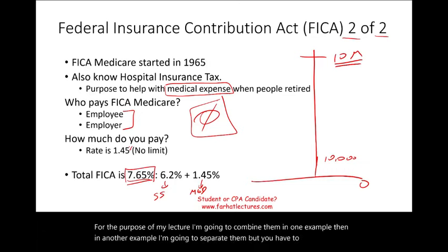There are also taxes not visible on the employee's paycheck but paid by the employer. One is SUTA — State Unemployment Tax Act. Its purpose is to compensate employees who are laid off. The rate varies by employer within each state — one company might pay 4%, another 2%, another 5%. There is a limit, typically $7,000–$8,000, after which the employer stops paying. This is a merit system: companies that frequently lay off workers pay higher rates; those that retain employees pay less.